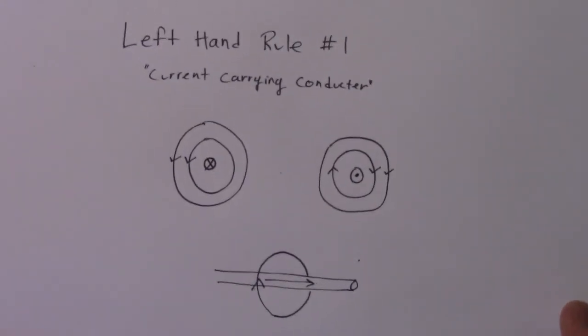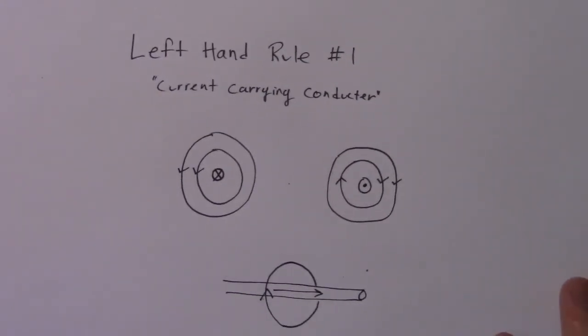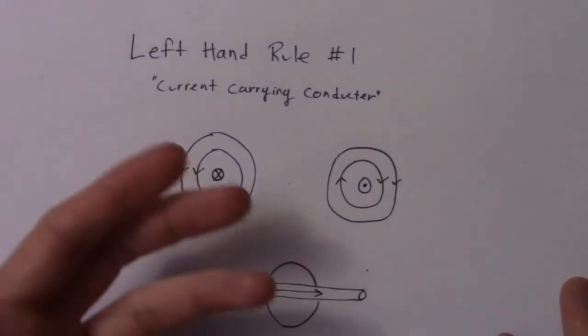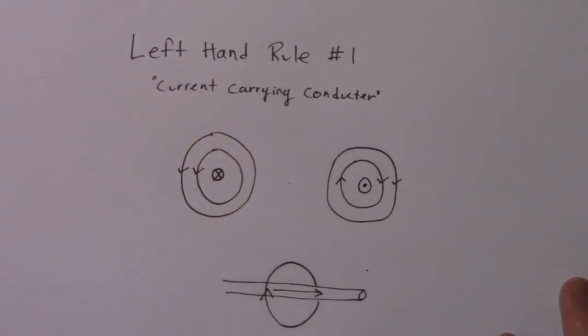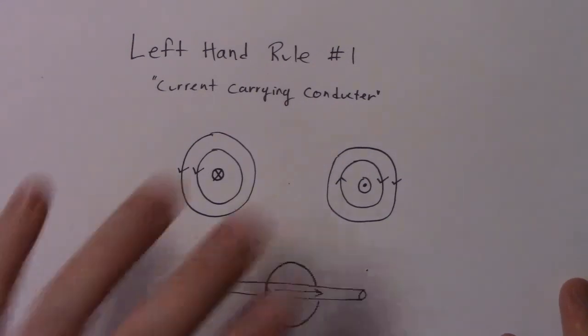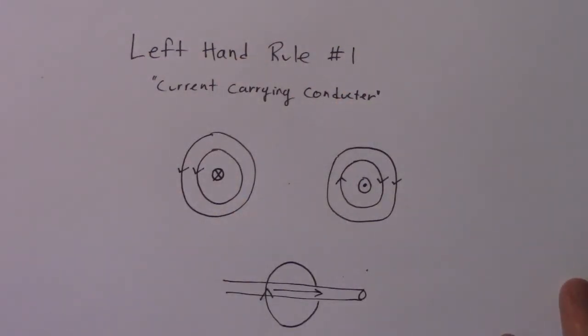So that's left-hand rule number one. It's for a current carrying conductor, and it's useful for determining the direction of magnetic field in a wire. I hope this helps you solve some physics questions, even though my hand probably did a crappy job of showing you. Thank you guys very much. Thanks for watching.